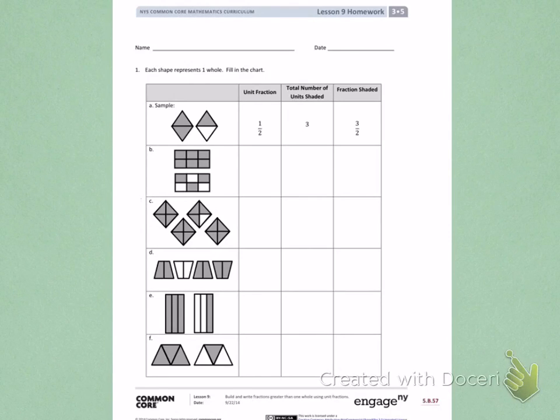Letter B. When I look at the first picture, I can see it is divided into equal parts. And those equal parts are 1, 2, 3, 4, 5, 6. So my unit fraction is 1 sixth. When I count the shaded parts, there are 6 plus 7, 8, 9.